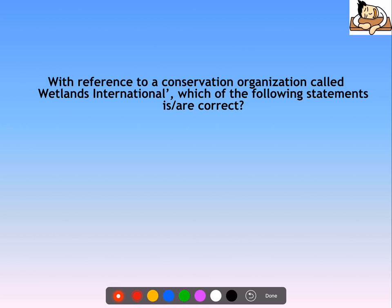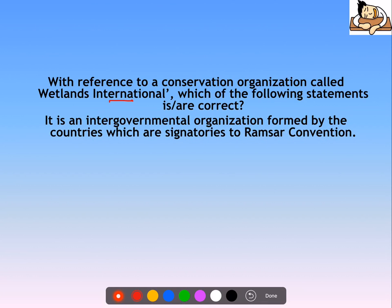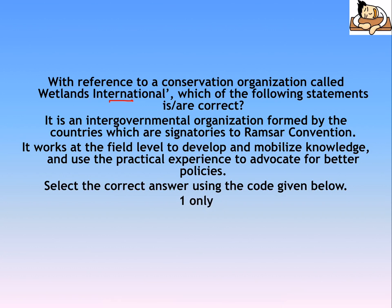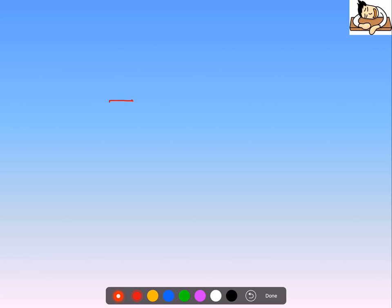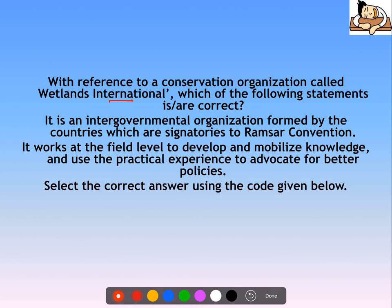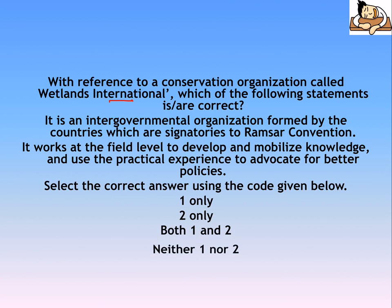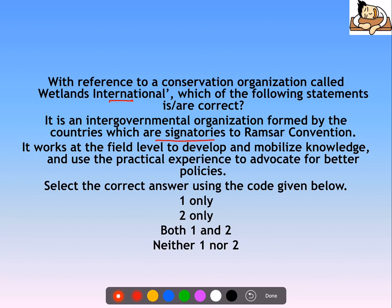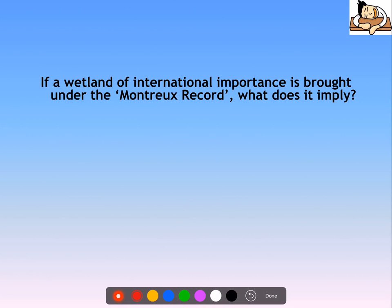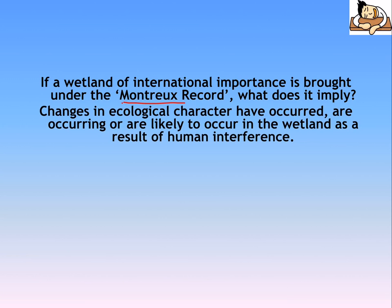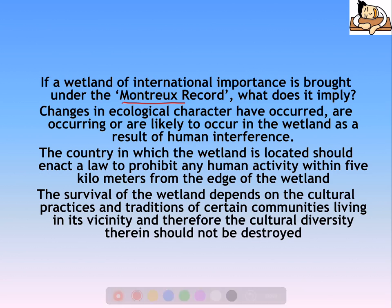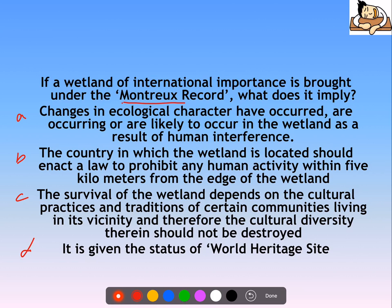Let's look at some practice questions. With reference to the conservation organization Wetlands International, which statements are correct? It is not an intergovernmental organization formed by Ramsar signatory countries — it is an NGO. However, it does work at the field level to develop and mobilize knowledge and use practical experience to advocate for better policy. So the correct answer is statement two only. Next: if a wetland of international importance is brought under the Montreux Record, it implies that changes in ecological character have occurred, are occurring, or are likely to occur as a result of human interference — answer is A.